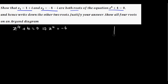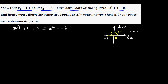Let me draw the imaginary and real axes. Negative 4 sits on the real axis, 4 units away from the origin. The angle from the positive x-axis is 180°. So the polar form of -4 is 4 cis 180°.